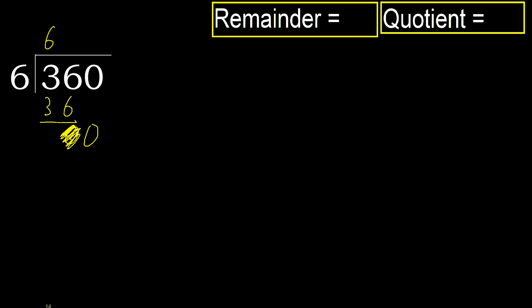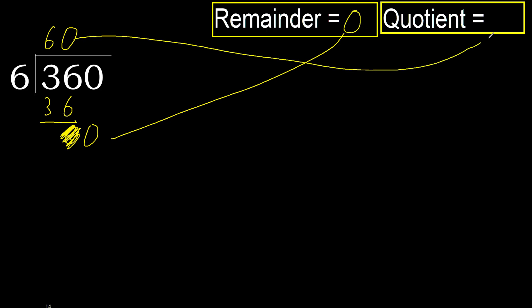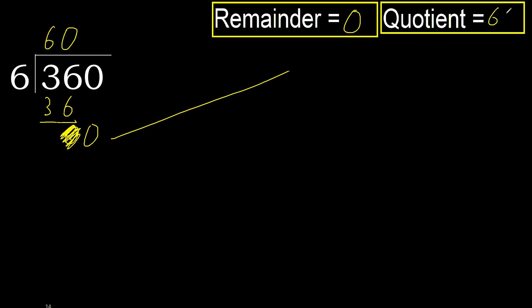Therefore, finish it. Complete — always complete with 0. Complete with 0 because here, finish it with this number. 360 divided by 6 is 60.